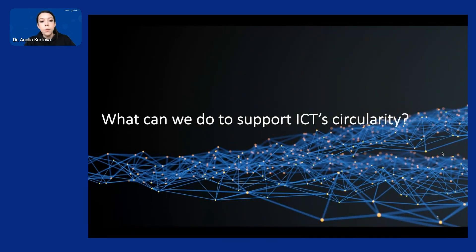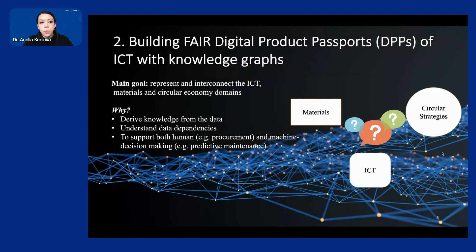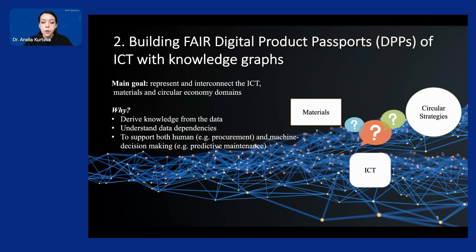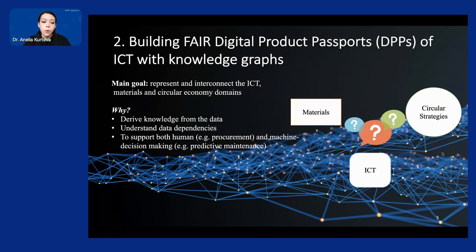What can we do about it, and how can we actually support ICT's circularity? In the Replanet project, we are using knowledge graphs to build FAIR digital product passports of ICT, such as laptops. We know that ontologies and knowledge graphs by design support FAIR data, and that's why we're utilizing them. The main goal is to represent and interconnect the ICT materials and circular economy domains, derive knowledge from the data, understand different dependencies, and use that to support both machine and human decision-making. On the human side, we want to support more sustainable ICT procurement; on the machine side, we're interested in machine learning for predictive maintenance.